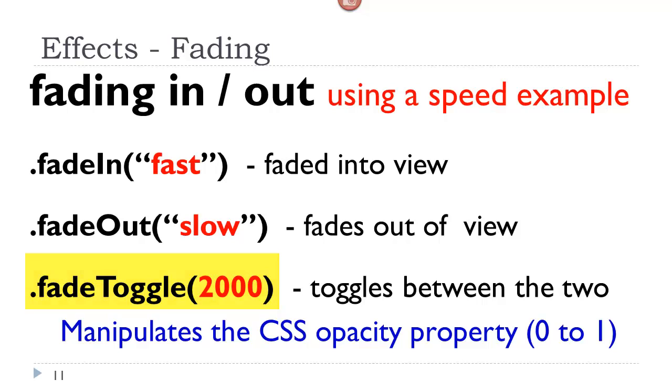What this is technically doing, behind the scenes, is manipulating the CSS opacity property. So by default, if something is on the page, it has an opacity of 1. And when we fade it out, we are slowly setting the opacity property down to 0. And then vice versa, when we toggle it back.